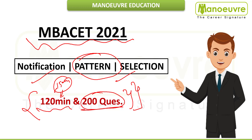Based on this new pattern, what should be the strategy? I will be making a separate video on this, but according to me, if you want to hit a good score, always go for the easy level questions first and attempt the moderate questions later. Forget about the tough ones — there simply won't be enough time.